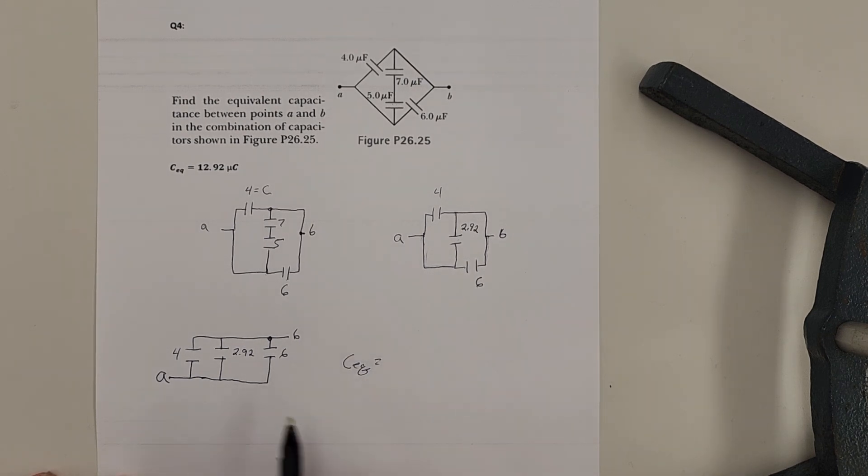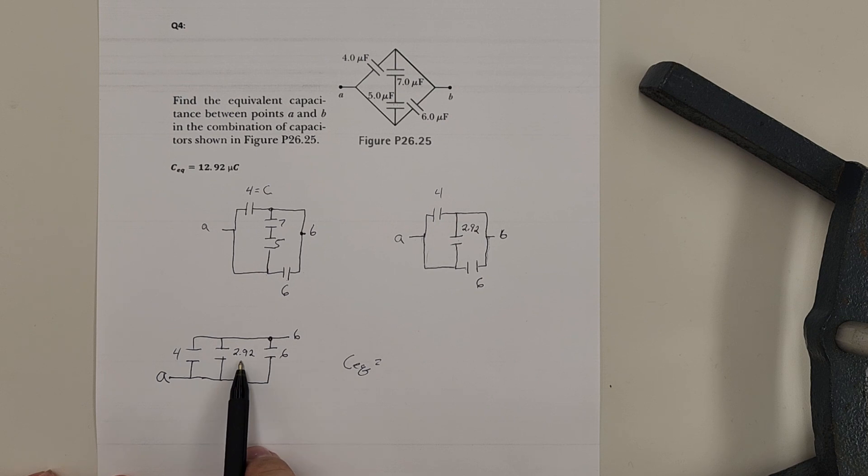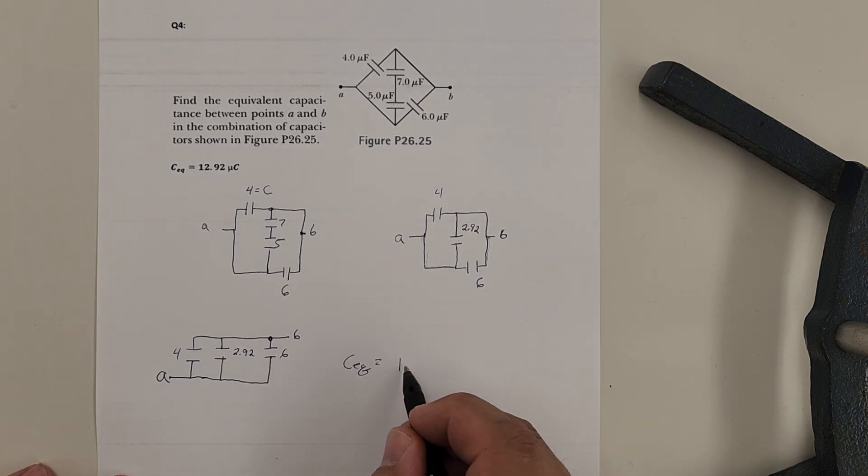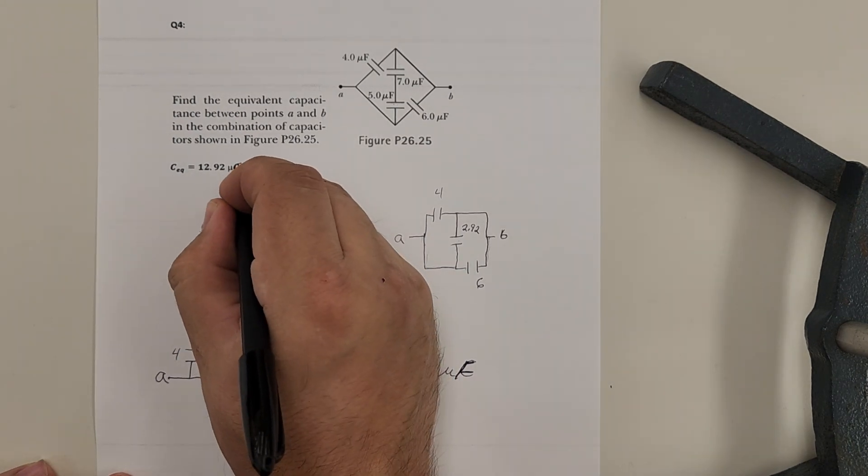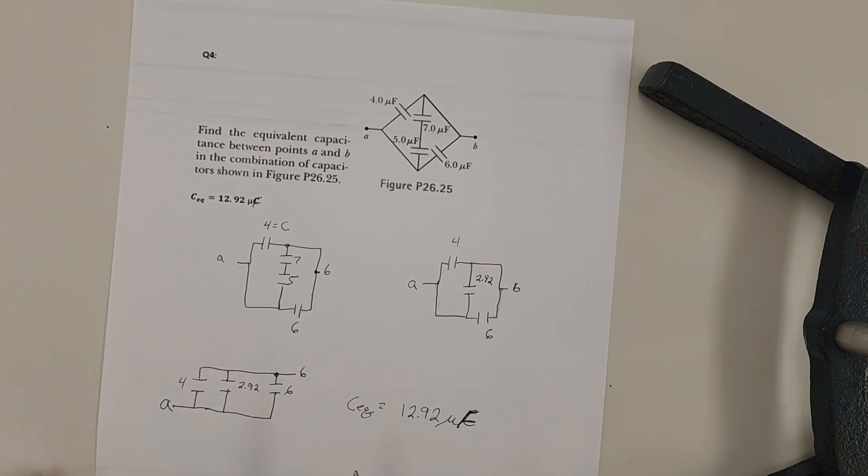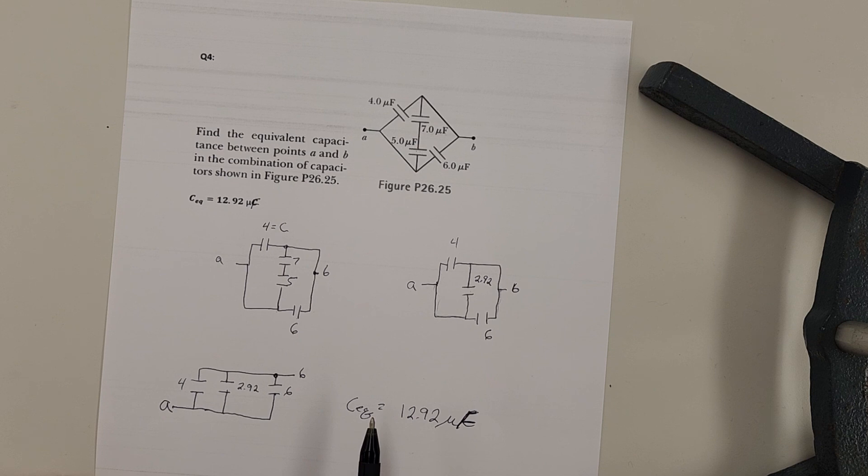C equivalence on this is just going to be 4 plus the 2.92 plus the 6. 12.92. And our terms all along were microfarad. I have to change that. It's microfarad, not a microcoulomb. Microfarad.